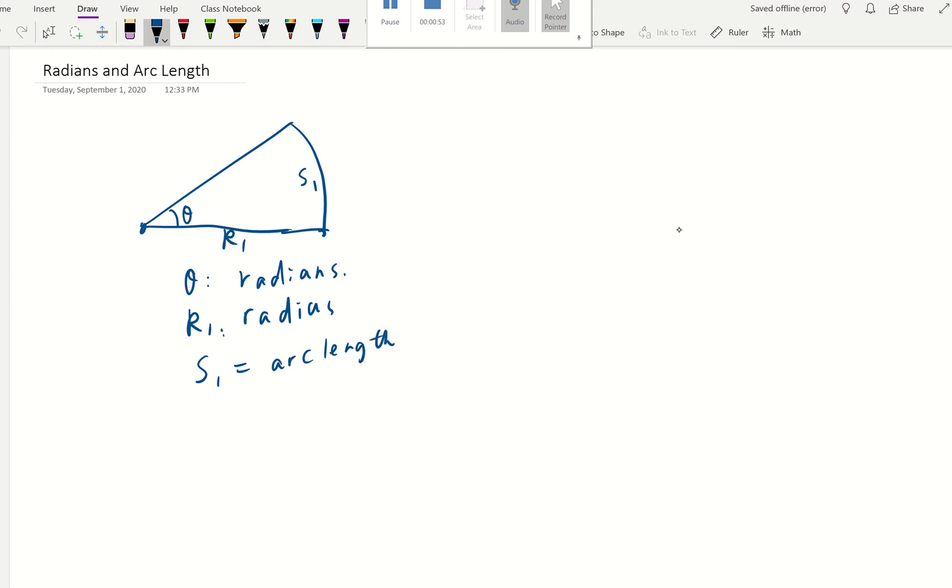So there's a relationship for that. Arc length is going to be equal to the angle expressed in radians times the radius of the circle.